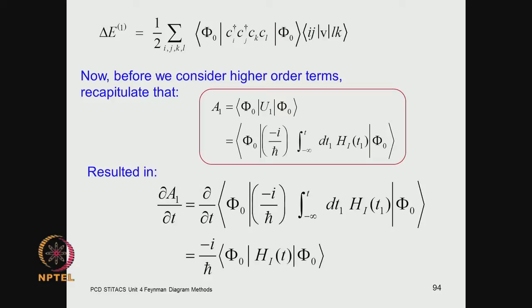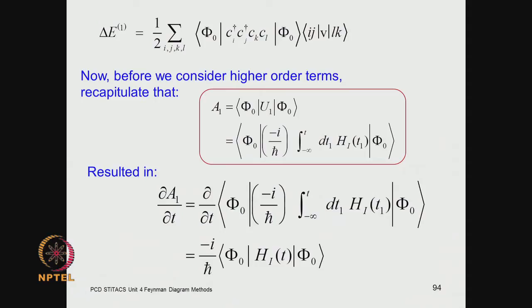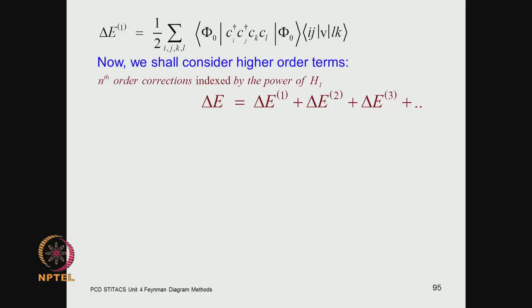Before proceeding to higher order terms, let me remind you: when you express A1 as the matrix element of the first order time evolution operator with only one time parameter, the result is the matrix element of the interaction picture Hamiltonian. This is a result we will make use of when dealing with second and higher order terms. Your result becomes independent of t1 which gets integrated out, and the result carries the interaction Hamiltonian with argument t.